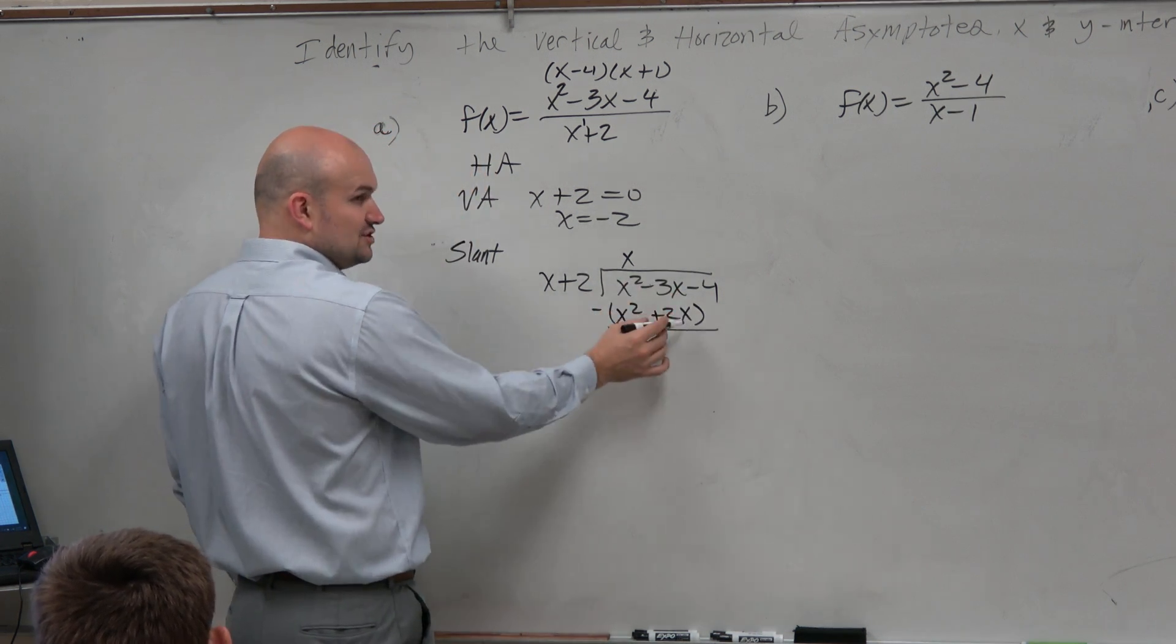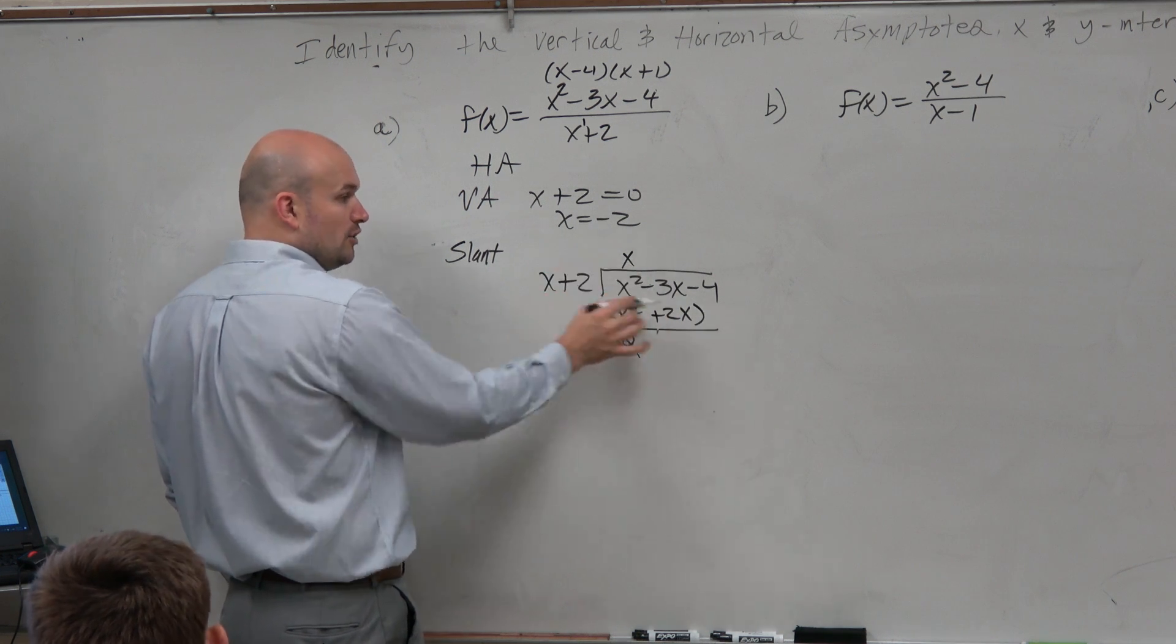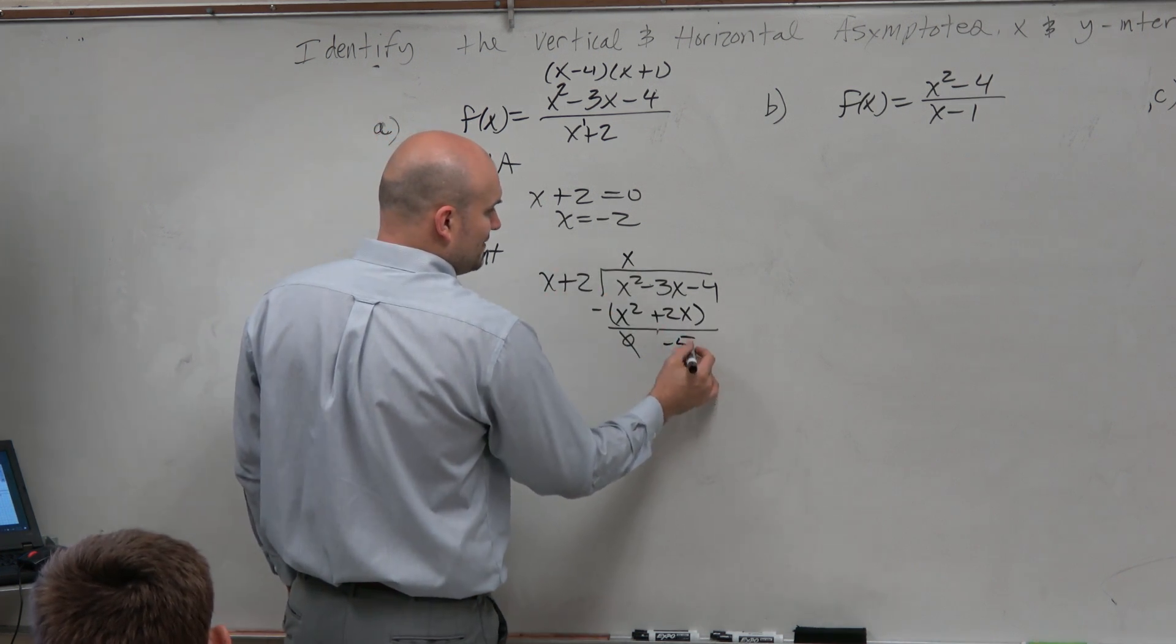That goes to 0. Negative 3x minus 2x. You owe me $3. You borrow two more. You now owe me $5.